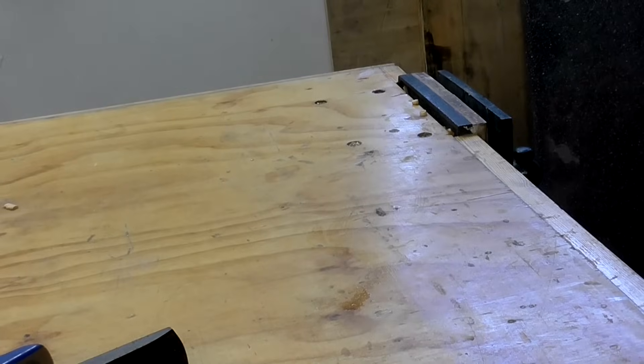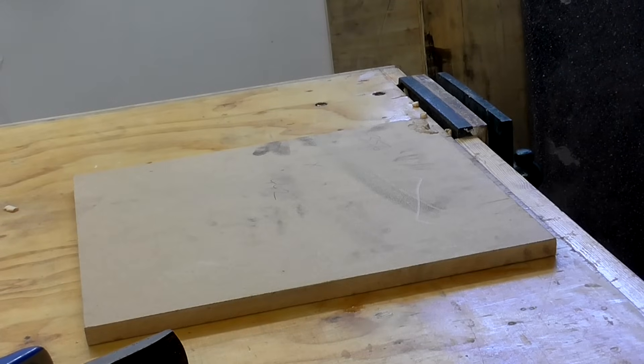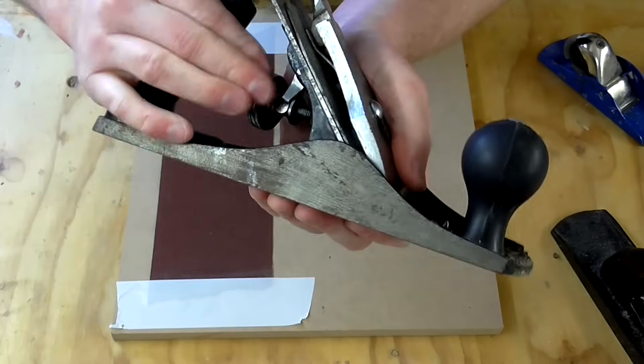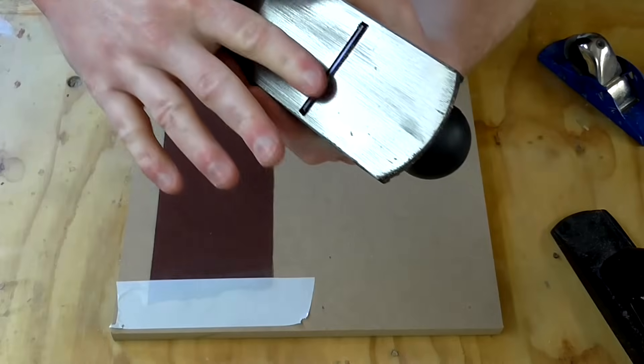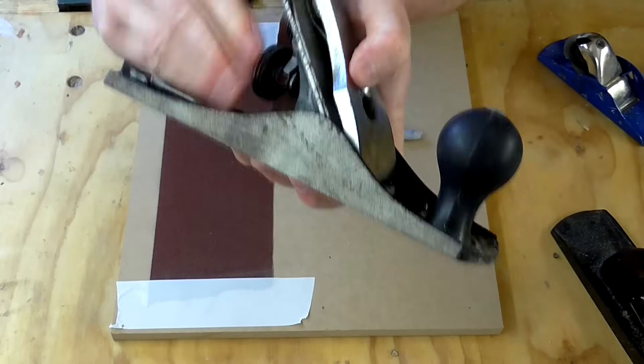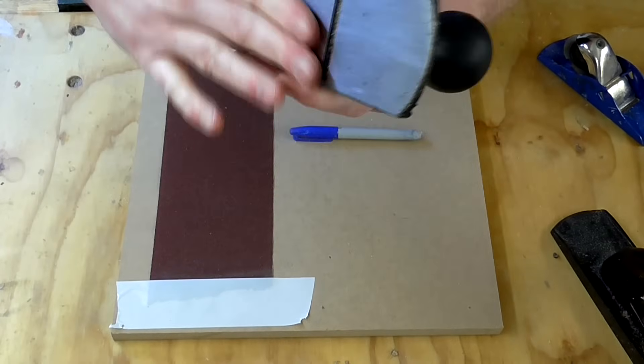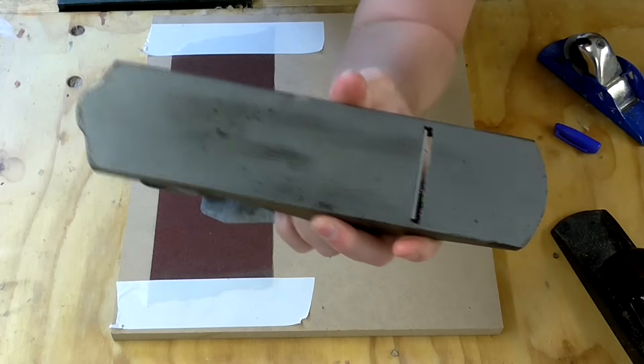Here I'm using a piece of MDF. You can stick it down with some spray adhesive if you have some. Back off the cutting iron so that it's well clear of the mouth. It's better to leave the cutting iron fitted rather than taking it out entirely as the tension of the lever cap when the cap and cutting irons are fitted can alter the shape of the sole very slightly.